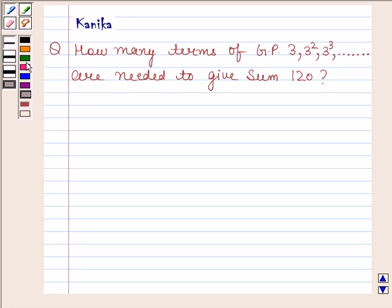Let's now begin with this solution. In this question, we have to find number of terms of GP 3, 3 squared, 3 cubed and so on, which are needed to give sum 120. So, let N be the number of terms needed.